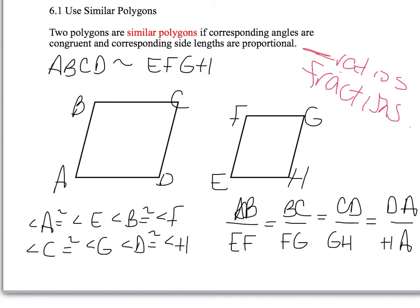Here we have a quadrilateral. ABCD is similar to EFGH — that symbol means 'is similar to.' You can see they're not congruent; this one is much smaller than the other. For similar polygons, the corresponding angles are congruent: A is congruent to E, B is congruent to F, C is congruent to G, and D is congruent to H.